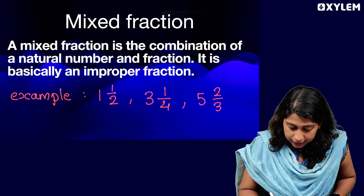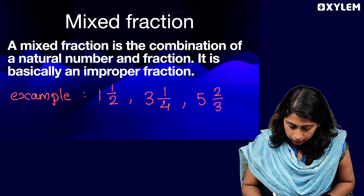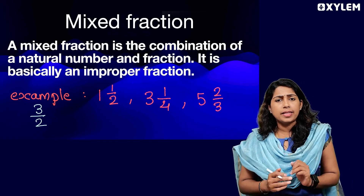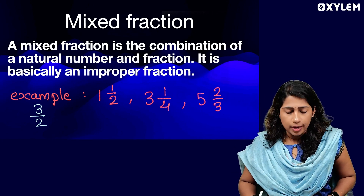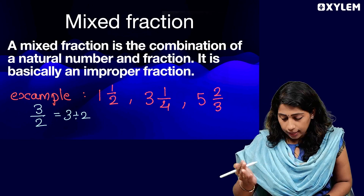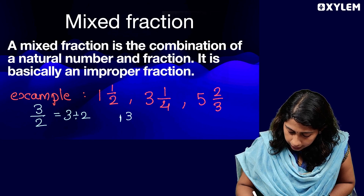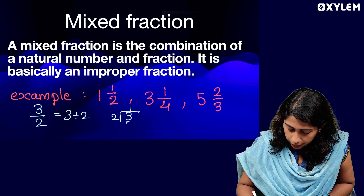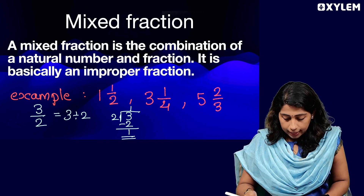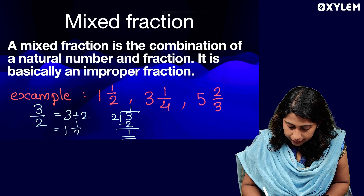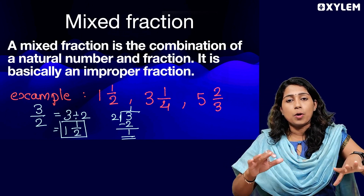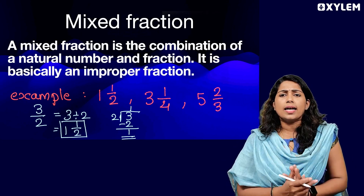If we convert the improper fraction 3 by 2 into a mixed fraction — 3 divided by 2: how many times does 2 go into 3? One time. 2 ones are 2. The remainder is 3 minus 2, which is 1. So we get 1 and 1 by 2. This is how we convert an improper fraction to a mixed fraction.